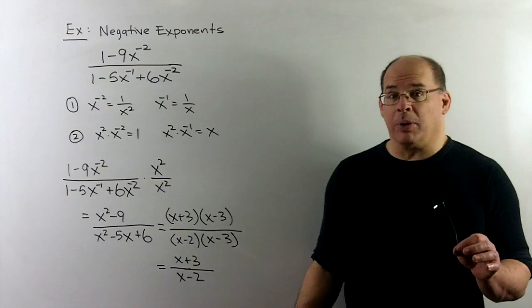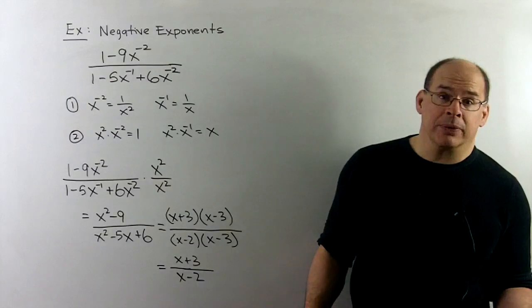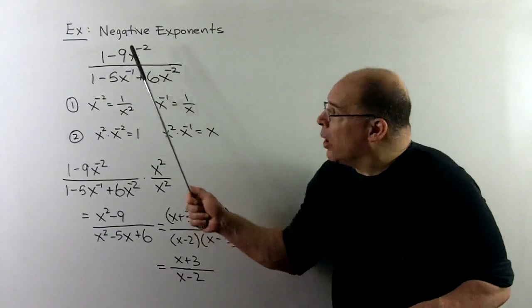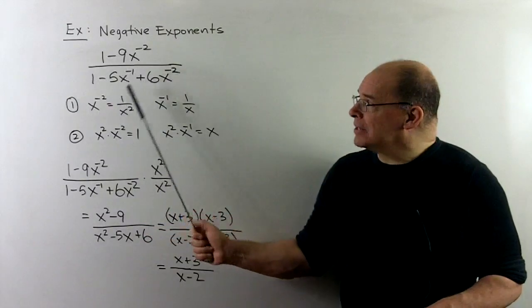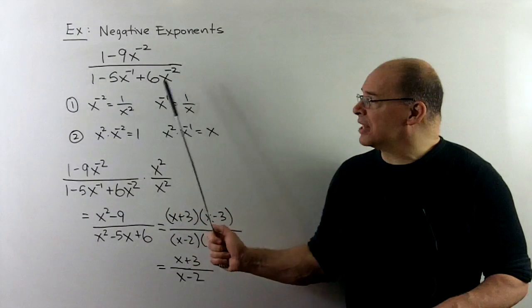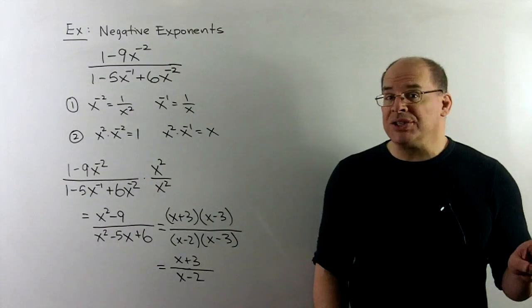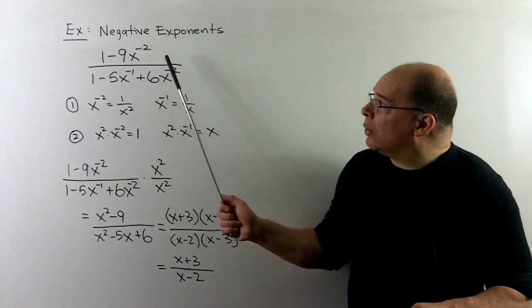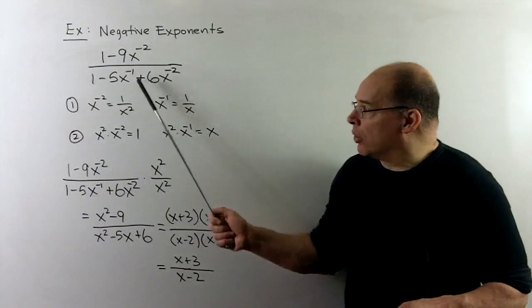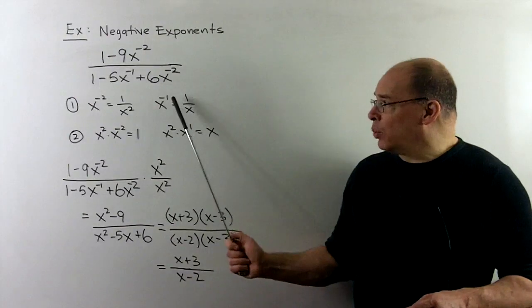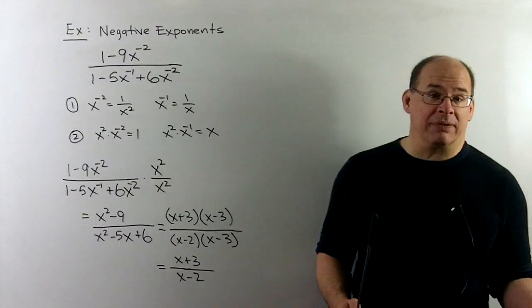Final example. Negative exponents can introduce fractions inside of fractions. For instance, we take 1 minus 9x to the minus 2 over 1 minus 5x to the minus 1 plus 6x to the minus 2. It doesn't look like fractions inside of fractions, but if we rewrite the negative exponents, for instance, x to the minus 2 is 1 over x squared, x to the minus 1 is 1 over x, that becomes fractions inside of fractions.